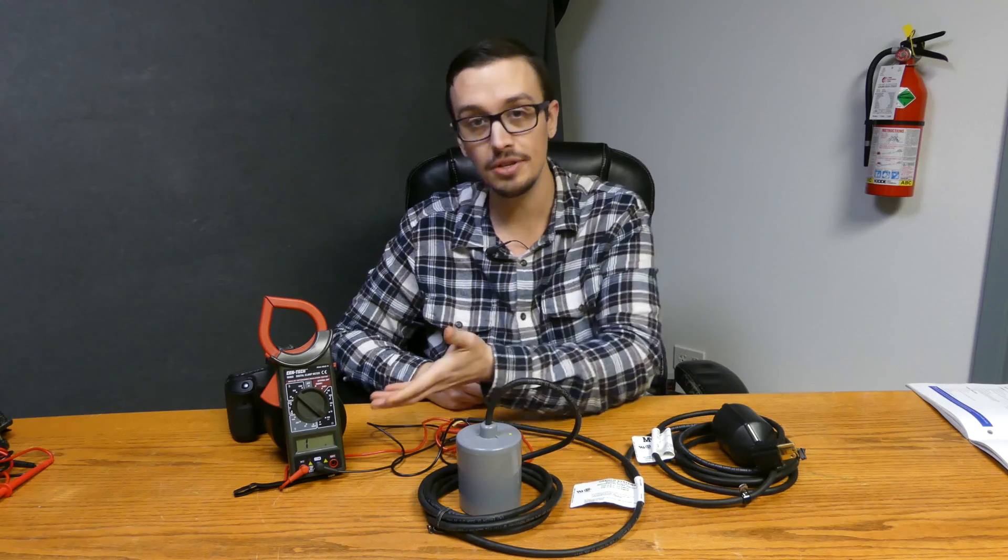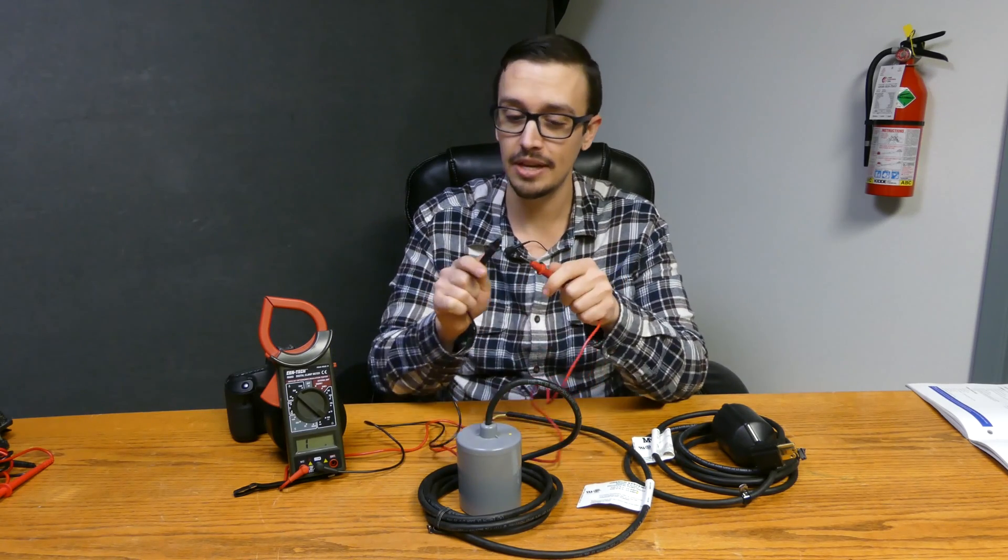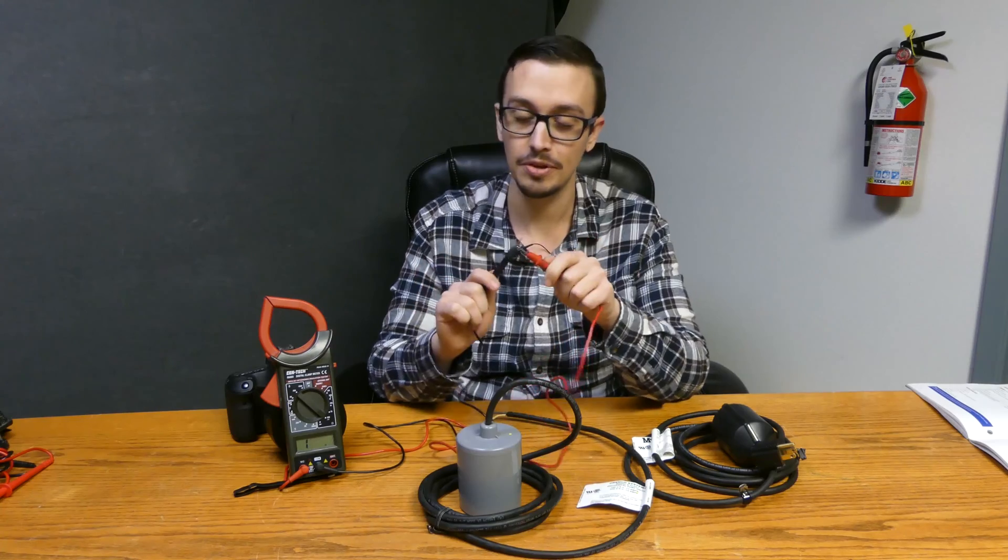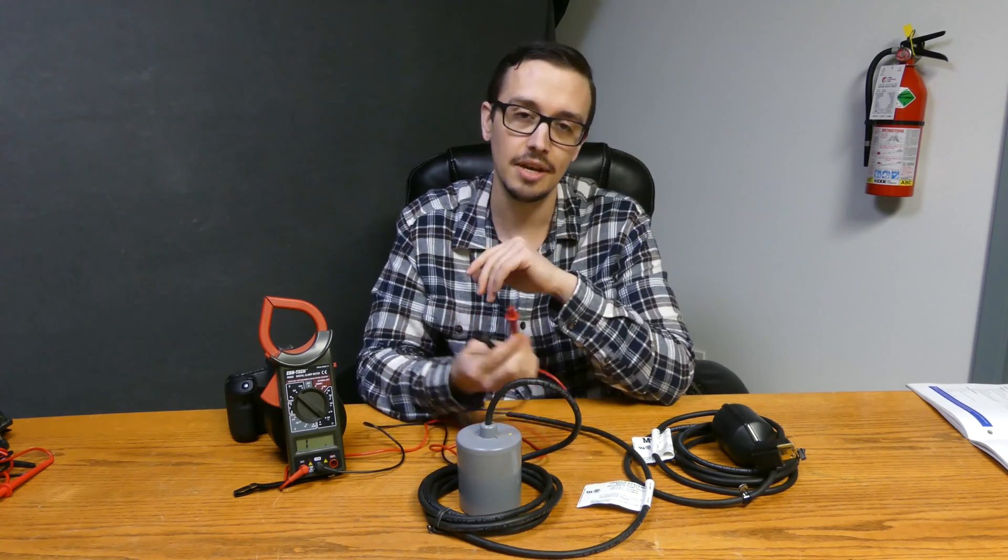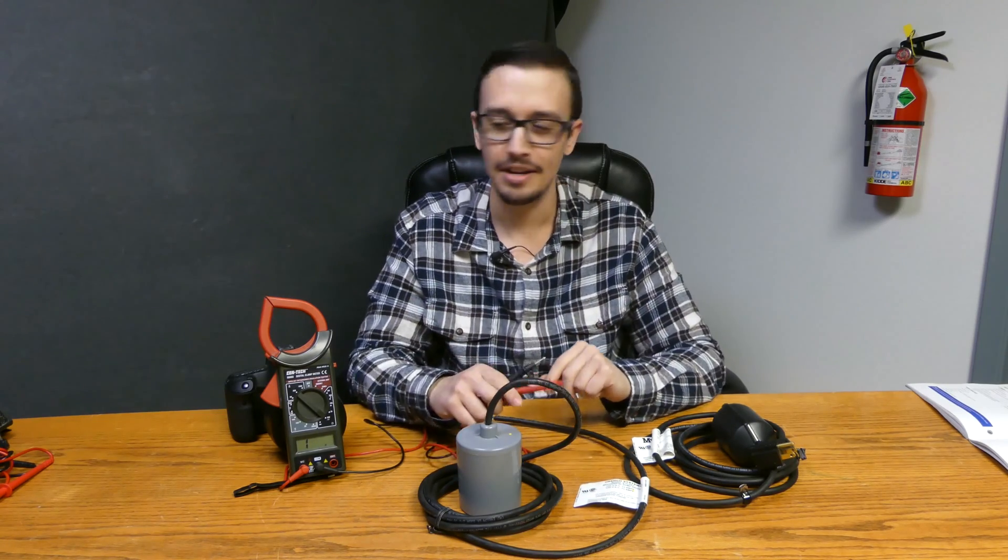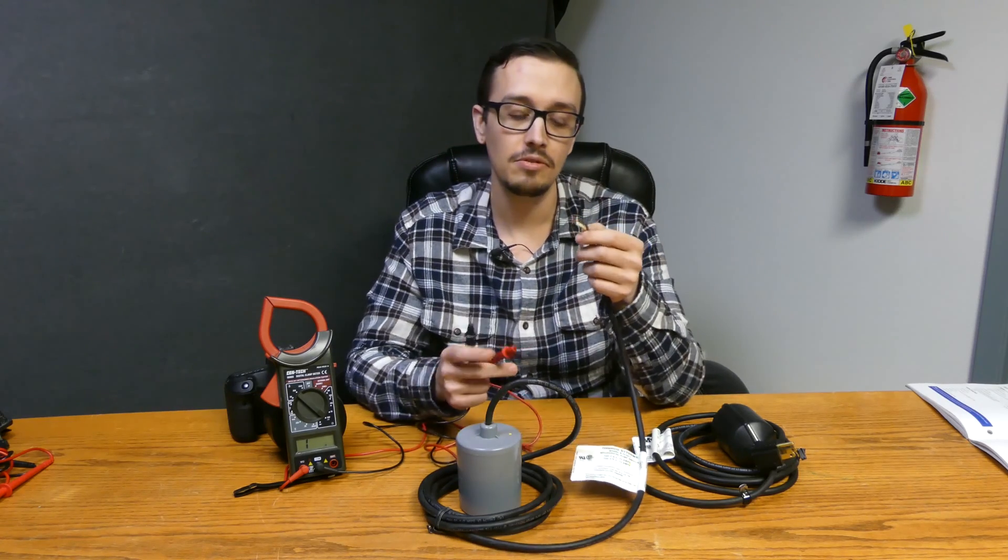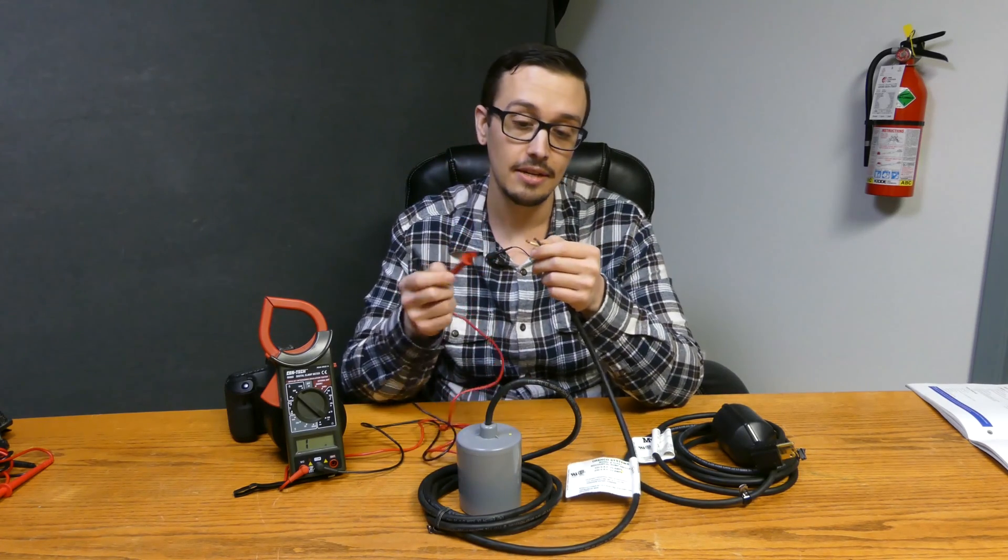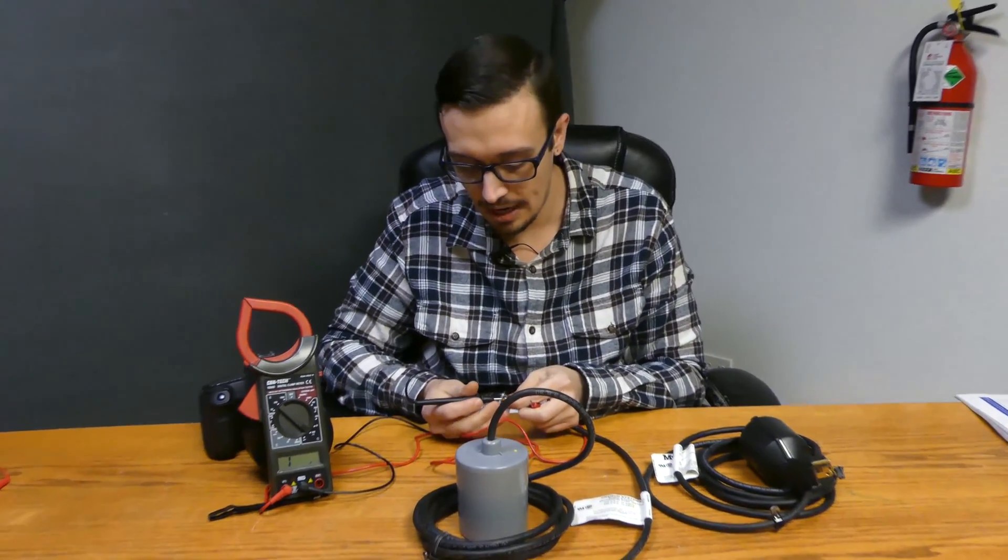We're going to show you how to test those using an ohm meter. So we've got the meter set to the sound setting. I'm sure you heard that. We're able to easily and audibly tell what our connection is doing, whether we have one or not. Anyways, basically what we're going to do is hook the meter one side to one side of the wire and one side to the other side of the wire and see what happens.